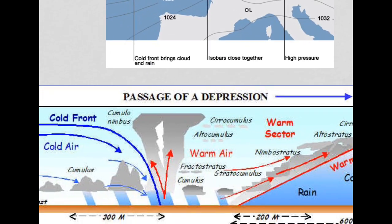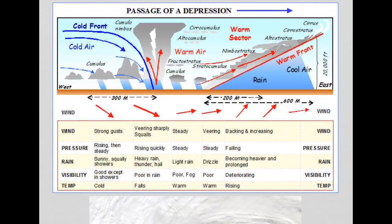This is the cross-section of a depression. The passage of a depression moves in an easterly direction, so this is the first place on the land to experience the depression. You can see the warm front slopes at an angle. In front of the warm front we have cool air, and behind the warm front we have the warm sector, which has warm air and warmer temperatures. Behind the cold front, we will have cold air again.